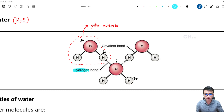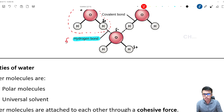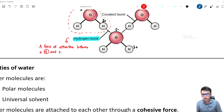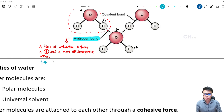You are going to learn this in your Form 4 Chemistry, but for now I'm going to teach you a little bit about the hydrogen bond. So what is the hydrogen bond? Hydrogen bond is actually a force of attraction between a hydrogen atom and a more electronegative atom — meaning a partially negative atom. For example, hydrogen forms a bond with oxygen. Hydrogen is partially positive and oxygen is partially negative, so they form a bond. We call this bond a hydrogen bond.